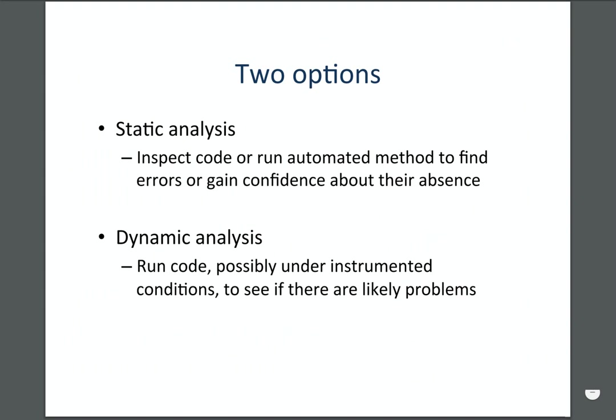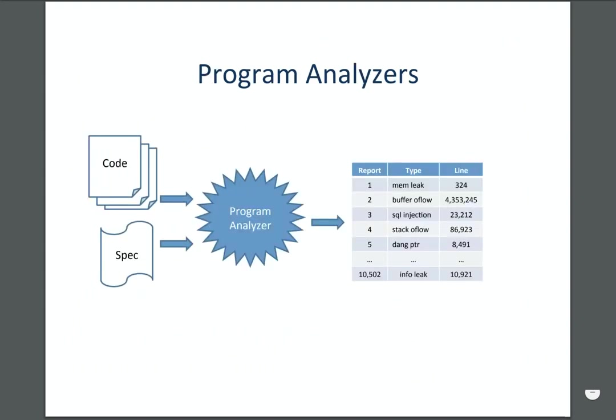There are two main categories of program analysis. Static analysis is source code or binary analysis without running the program — the kind of analysis the compiler does while converting code to a lower-level language. It allows you to reason about all executions of the program without having to run it on inputs. Dynamic analysis is the opposite: trying test cases and trying to break the code or find weaknesses by running those test cases on it.